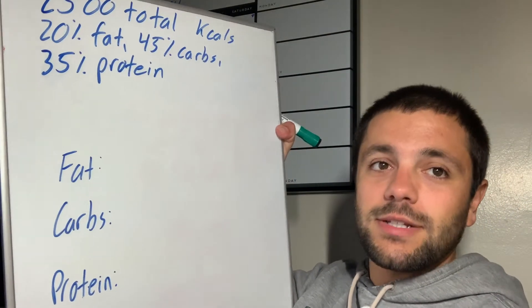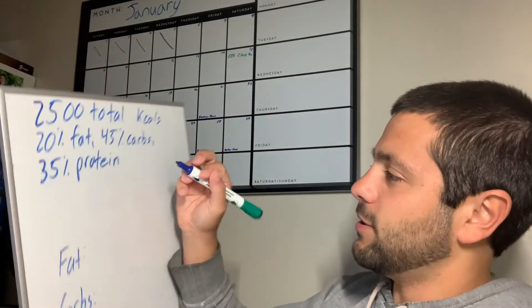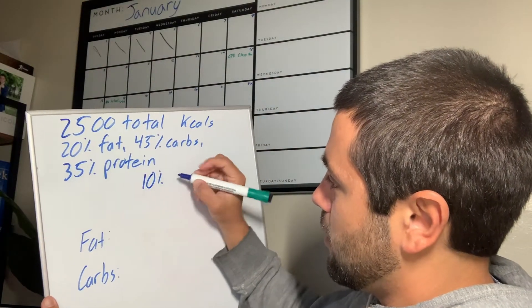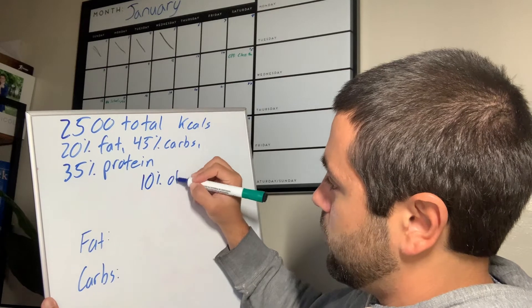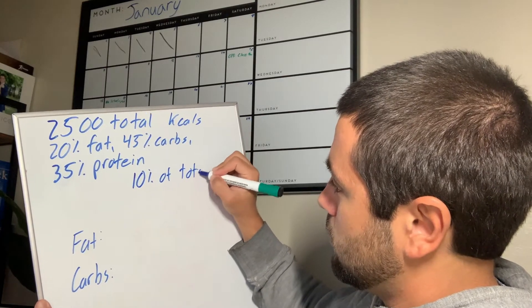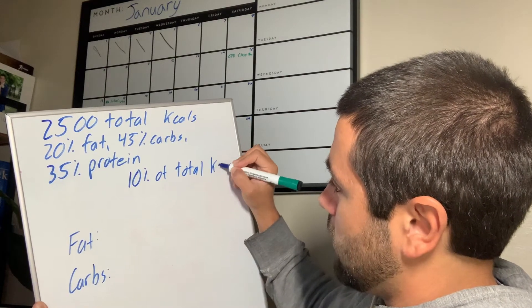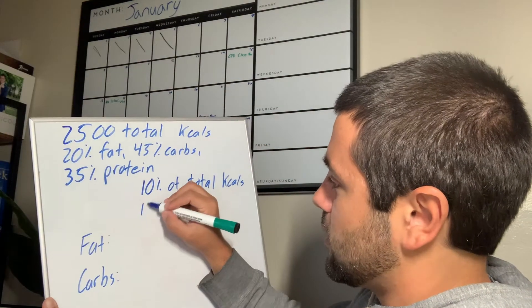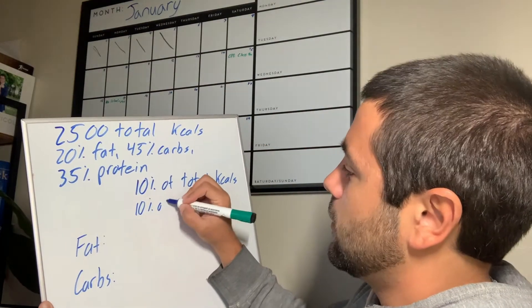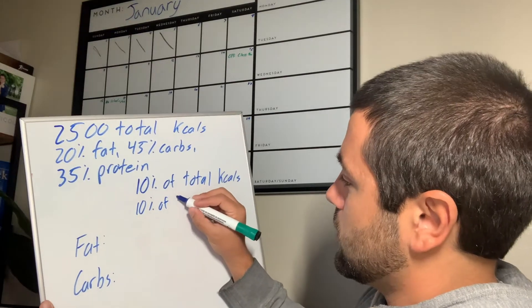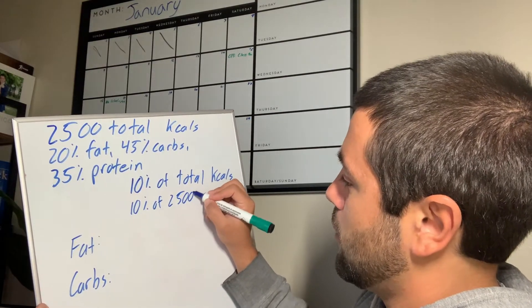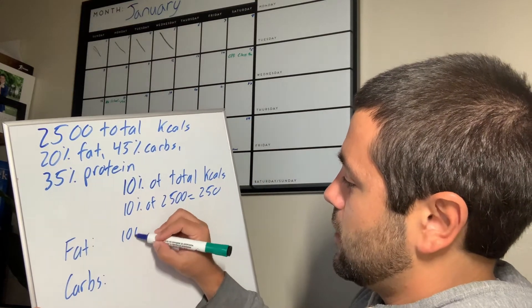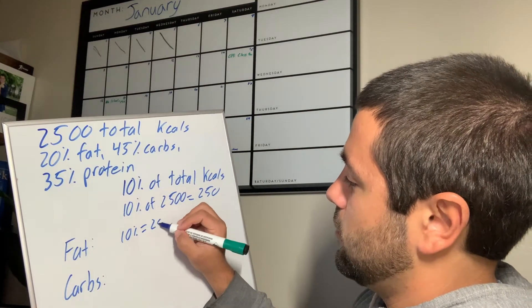How I do that is something called the 10% rule. What I'm going to do is take 10% of total kcals. So 10% of 2,500 equals 250, right? So I have 10% equaling 250.